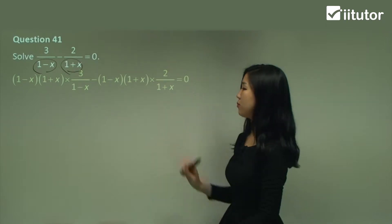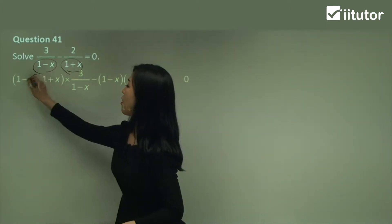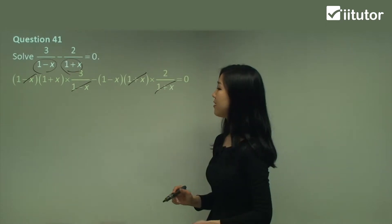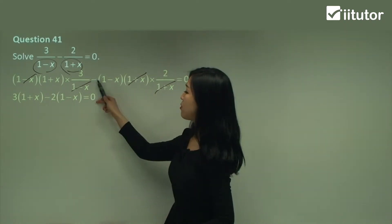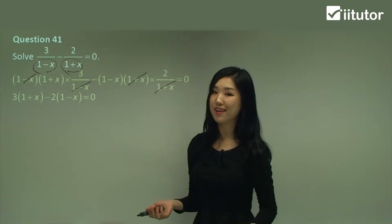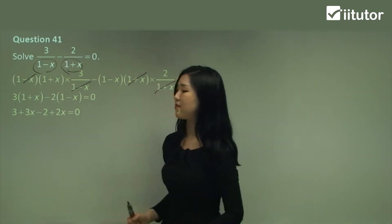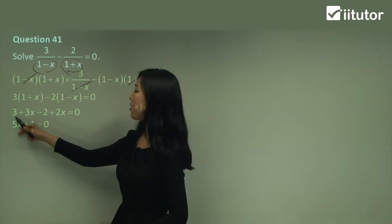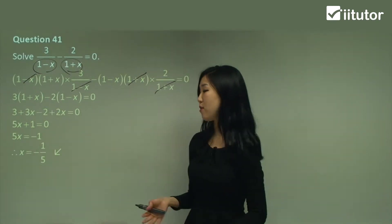So see how 1 minus x and 1 minus x totally cancel out? And here, 1 plus x and 1 plus x cancel out. So we just have 3 times 1 plus x here, and 2 times 1 minus x here, and remember to put the negative — and the rest is just 0. Now we've got rid of the fractions, so expand everything out. So we have 3 plus 3x minus 2, and minus minus is plus, so plus 2x equals 0. Gather your like terms — 3x plus 2x is 5x. 3 minus 2 is 1. So move the 1 over to the other side making it negative 1, and divide by 5 — so x is negative 1 over 5.